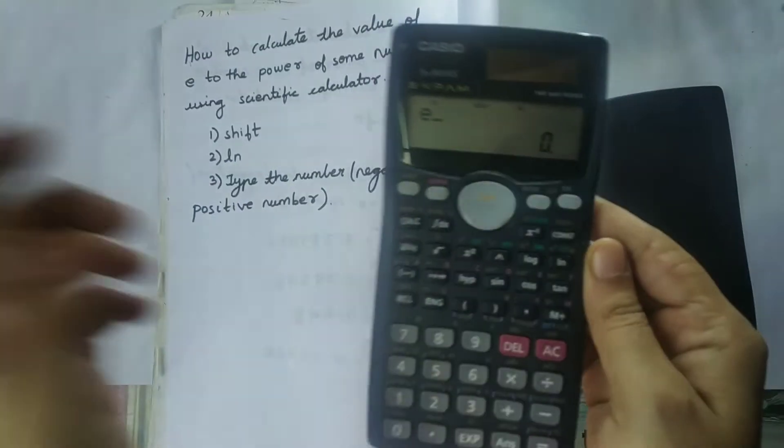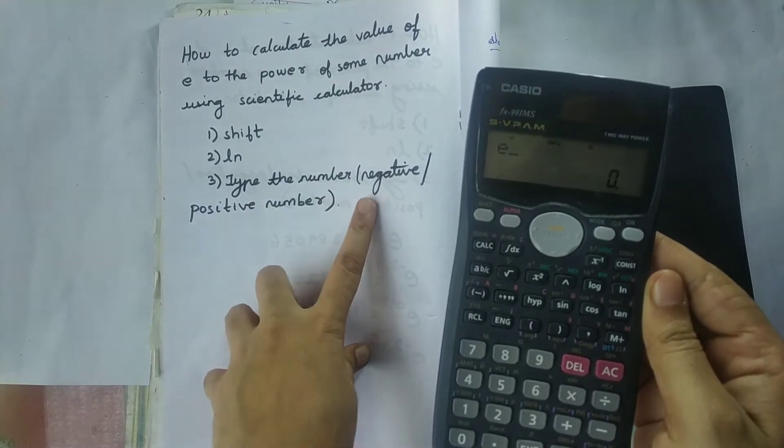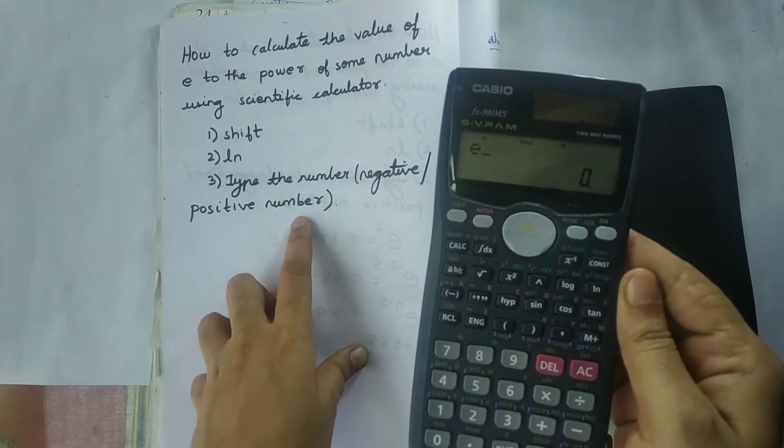The third step is I need to type the number. It can be a negative or it can also be a positive number.